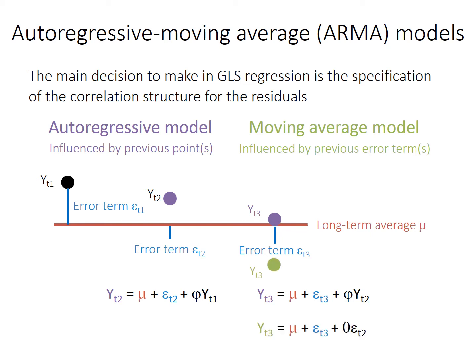In a moving average process, the point at time T3 is instead influenced by the error term at T3 and the error term at T2 — not where the previous point was. Unlike the autoregressive model, the T1 error or point has no effect anymore; our error terms are independent of one another. This difference — the gradually decreasing effect in an autoregressive model versus a moving average model only incorporating exactly the point just before it — is important when determining whether the data is autoregressive or moving average. This example is a first-order model, but there can be higher-order models that include contributions from two steps back, three steps back, or more.